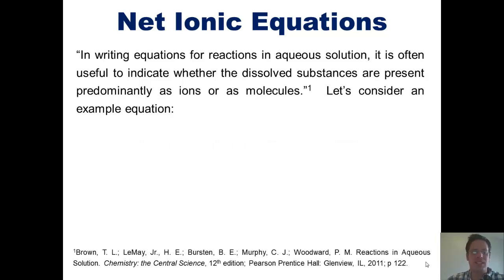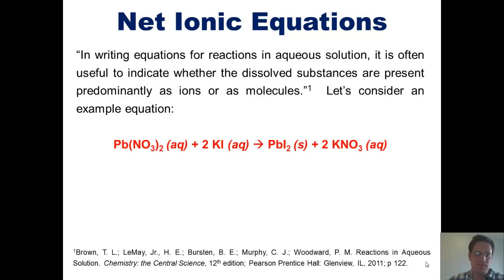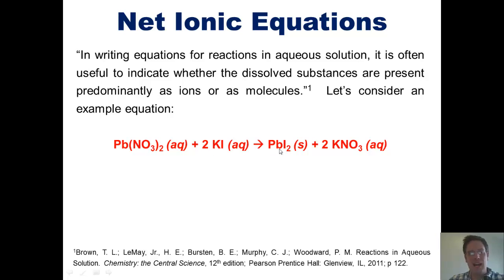Let's consider an example equation. Lead nitrate, which is soluble in water as indicated by the letters AQ, is reacting with potassium iodide, which is also soluble in water, to form lead iodide, which is a precipitate as indicated by the S — which stands for solid precipitate — and potassium nitrate, which is also soluble in water.